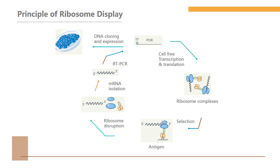During selection, the ribosome itself serves as the connector. These ternary complexes are exposed to target molecules. The displayed proteins — library members binding to the target — are enriched on the target and others are washed out, leading to ribosome disruption. From these bound complexes, the mRNAs are isolated, reverse transcribed, and PCR-amplified to serve as the input for another round. After three to five rounds, the resulting DNA fragments are ligated into an expression vector and their biological function is validated.